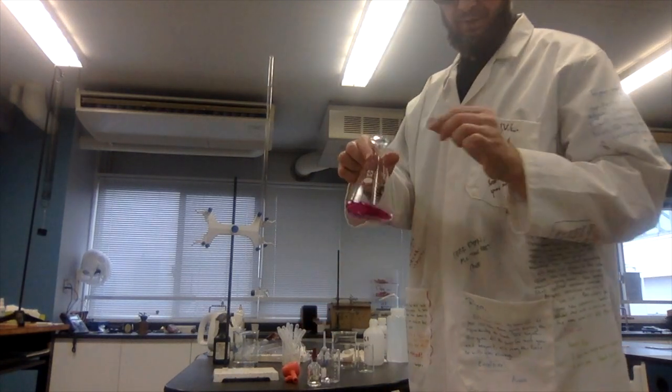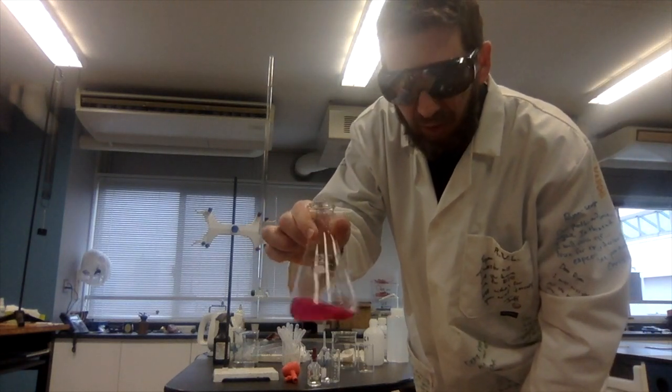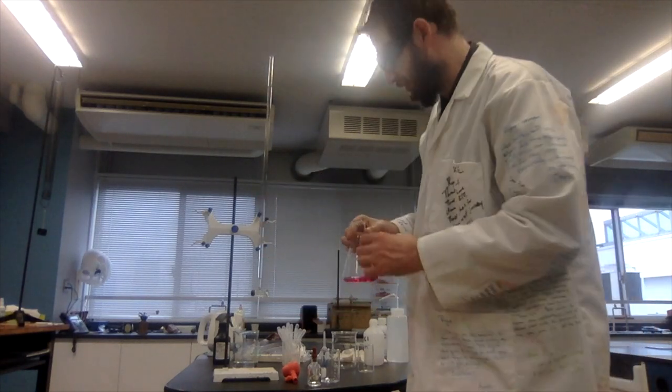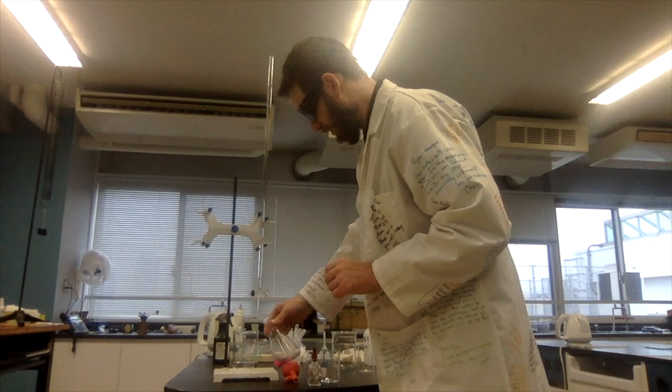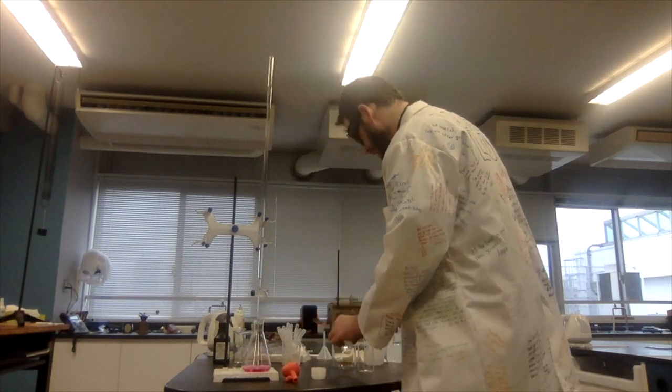Remember that phenolphthalein only indicates a pH of over 7.214. It will not indicate a perfectly neutral substance, but it will indicate over 7.214.